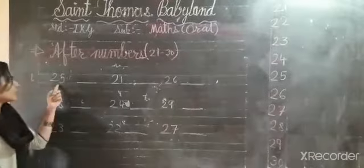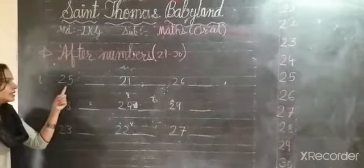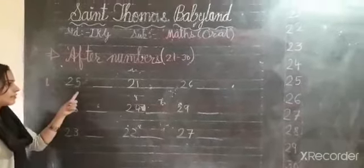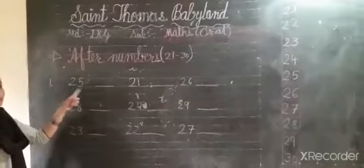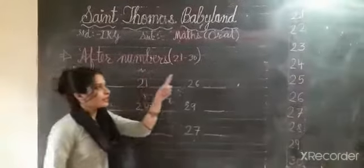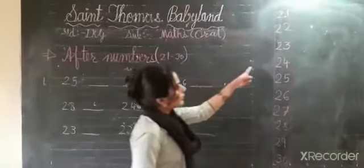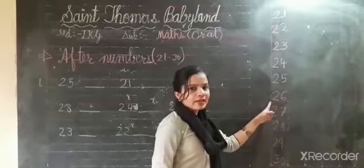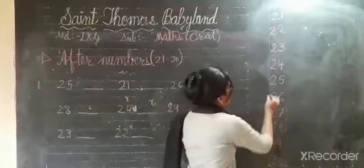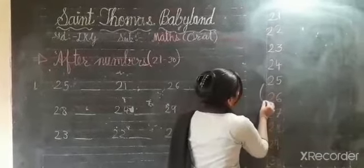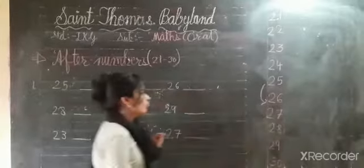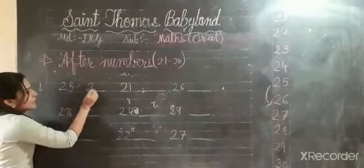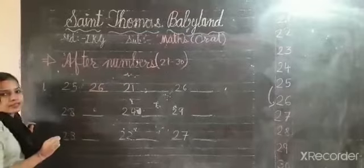So you can see here — what is this? This is 25. Down, what will come after 25? 26. So the answer is 26. Okay?